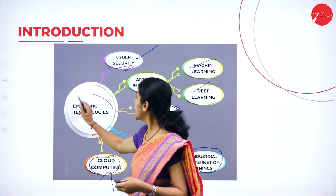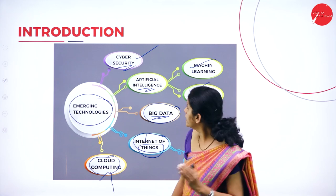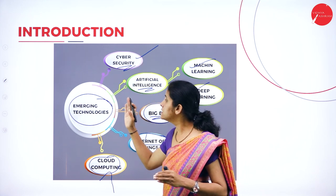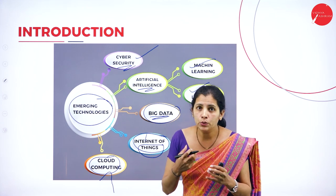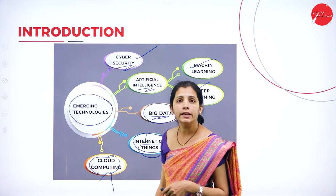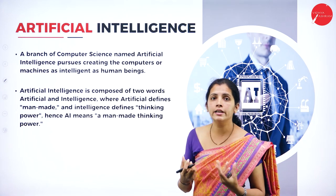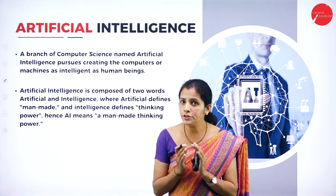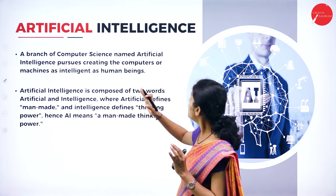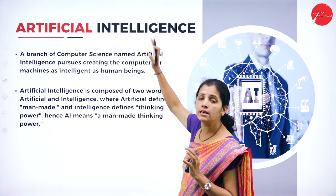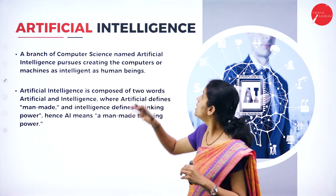All five — cyber security, artificial intelligence, big data, IoT, and cloud computing — are recent trends and new terminology called emerging technologies. In the digital world, we require all five emerging technologies to communicate and share data effectively. Now moving on to artificial intelligence: 'artificial' means man-made and 'intelligence' means cognitive.